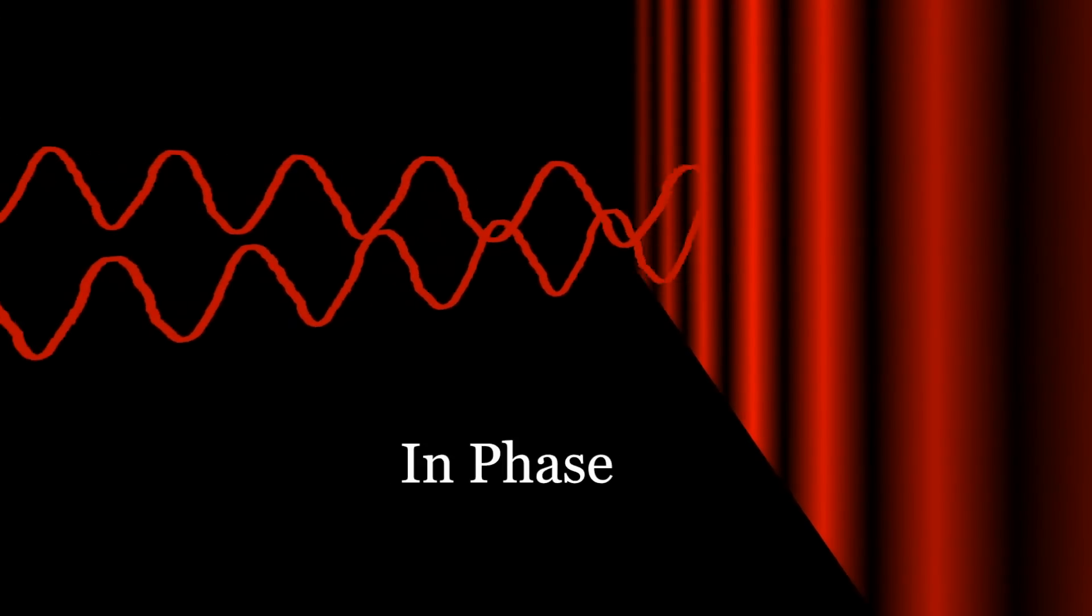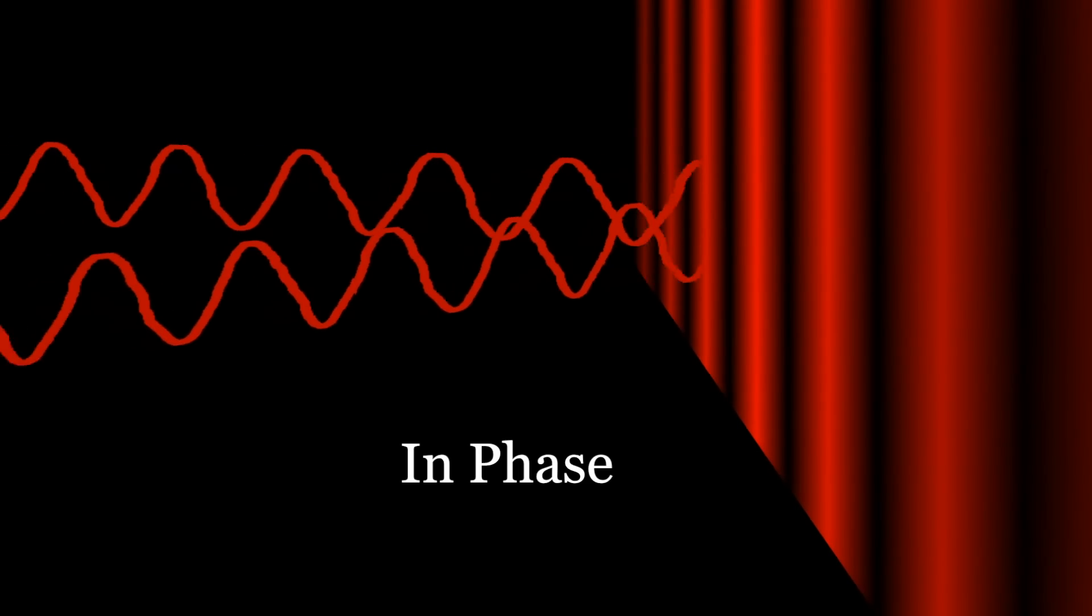But if you go further left, you see another bright spot. Because now the light from one of the slits has to travel a full extra wavelength compared to the light from the other slit. And so again they arrive in phase. Crests with crests and troughs with troughs, creating constructive interference. And so we see a bright spot of light.